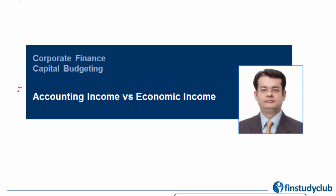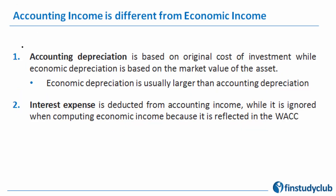Welcome to this video on accounting income versus economic income. This topic tends to confuse students a lot, which makes it of particular interest. We are trying to talk about different parameters — accounting income is used in a particular context for a particular purpose, and the other term may not be a perfect proxy. Let's not treat them as substitutes but understand the context and the logical difference between the two. Accounting income is nothing other than the reported PAT, which is profit after tax.